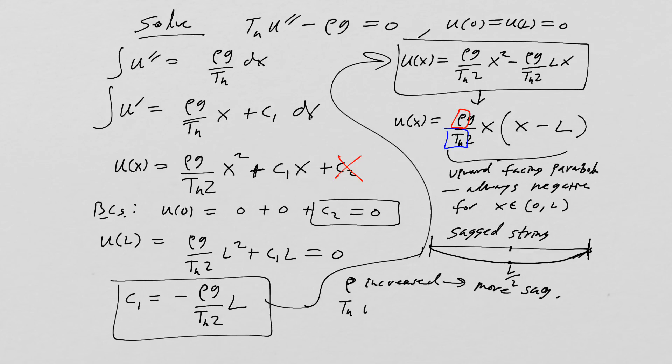If I take T_h and increase that, if I increase the tension on our elastic cable, we're going to get less sag. Just as you'd expect, and it's also just as you'd expect from looking at the formula. It's in the denominator, the tension is, and so it's going to be undercutting whatever that force of gravity is doing.